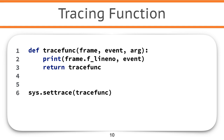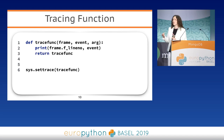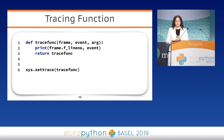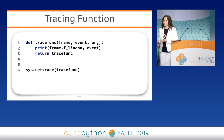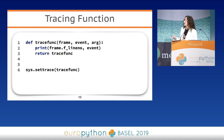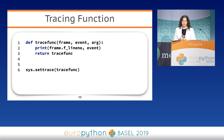The tracing function takes three arguments: frame, event, and arg. Frame is an object which contains information about the current place in the program. Event is the event which happened in that place. And arg is an argument of this event. We defined a simple tracing function which prints the line number and event which happened on that line number.